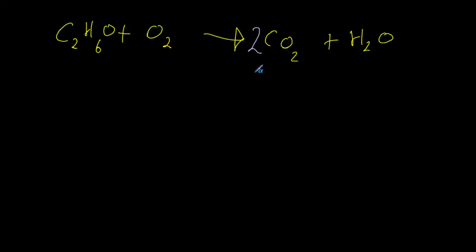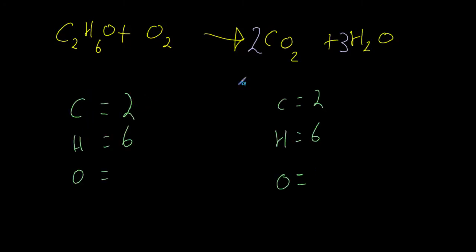Now we apply the same principle to the hydrogens. In ethanol there are six hydrogens, and that's the only place on the left hand side. On the right hand side, the only place we find hydrogens is in the water. So the number of hydrogens must equal each other. We have six here, and there are two hydrogens in each water molecule, so we need three waters to make six hydrogens in total. So now we have six hydrogens on the left and six on the right. To summarise: two carbons on the left, two on the right; six hydrogens on the left, six on the right.